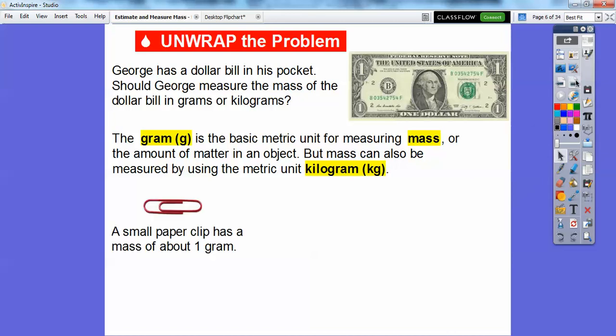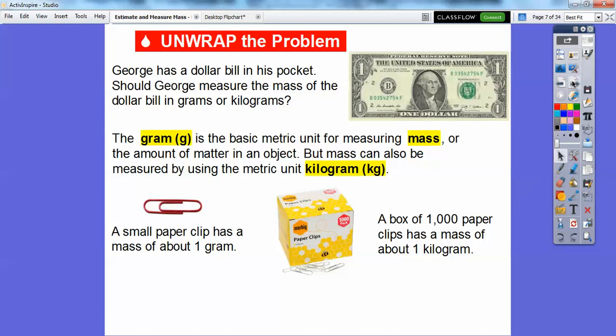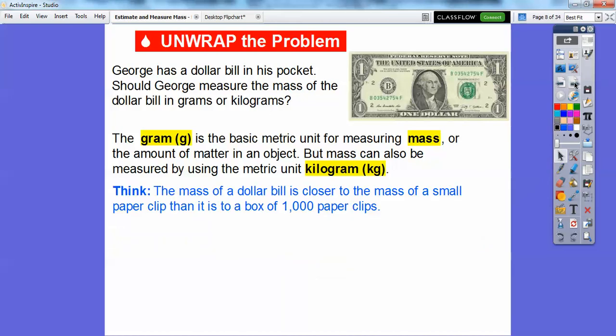A small paper clip has a mass of about one gram. Everybody has small paper clips, either in their teacher's desk or maybe your student desk at school. If you have a thousand of them, a box of a thousand paper clips, that measures the mass of about one kilogram. So the mass of the dollar bill, what do you think it's closer to, the thousand paper clips or one paper clip? Well, I think it's probably closer to a small paper clip than to a thousand box of paper clips. So since the paper clip was one gram, George should measure the mass of the dollar bill in grams.